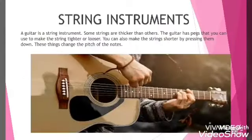String instruments. A guitar is a string instrument. Some strings are thicker than the others. The guitar has pegs that you can use to make the string tighter or looser. You can also make the strings shorter by pressing them.